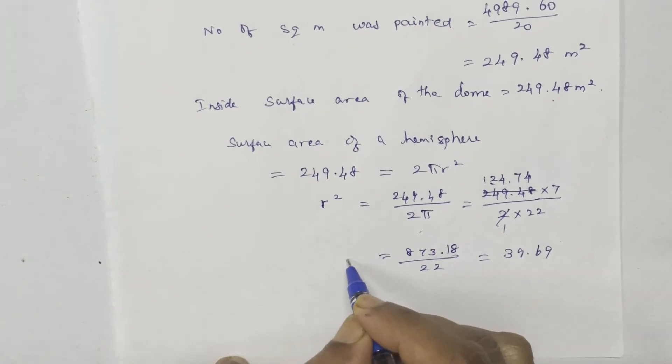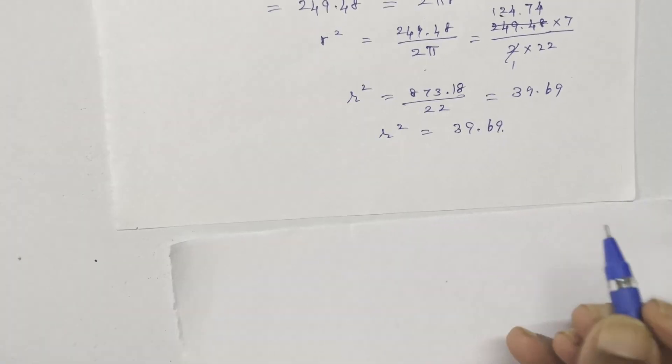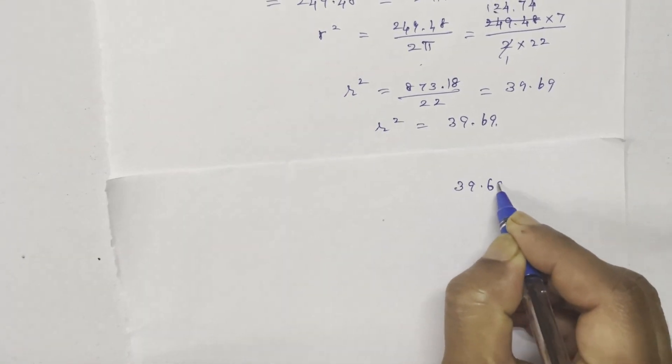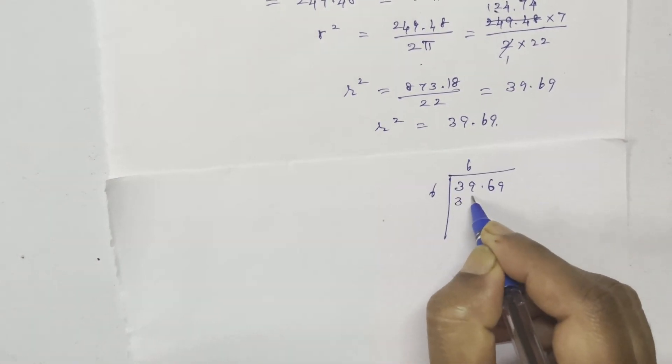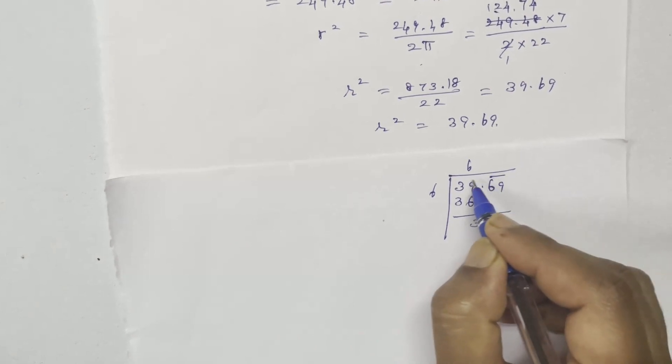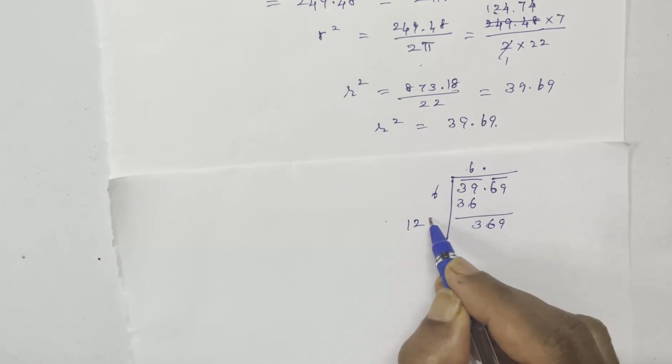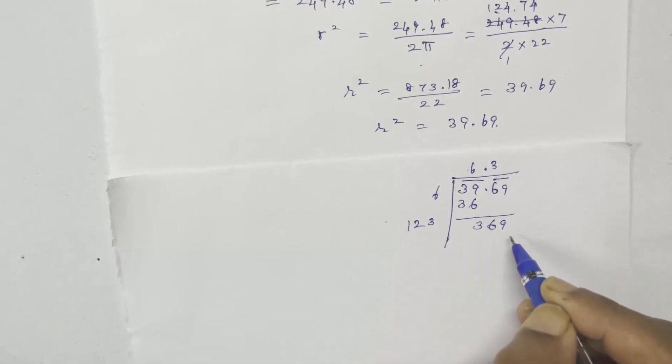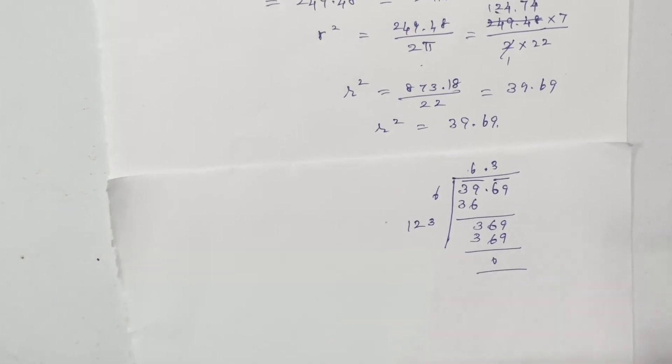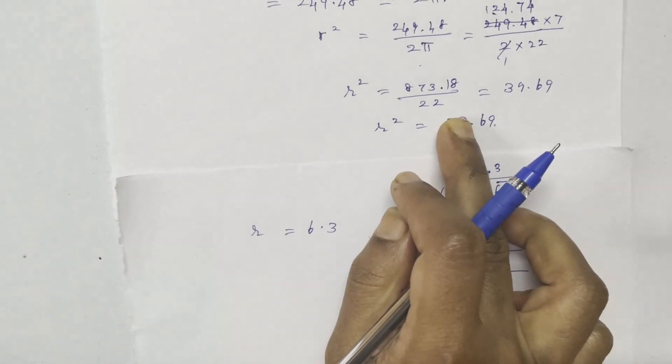r squared equals 39.69. Now r equals the square root. Taking the square root: 6.3. So the radius is 6.3 meters.